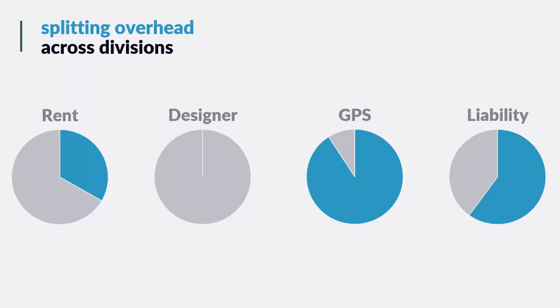Taking this approach to budgeting may seem like a little guesswork or gut instinct, but in fact it's probably the most accurate system you're going to get for splitting overhead because it looks at each expense individually and allocates, to your best knowledge, the right amount of overhead per division.